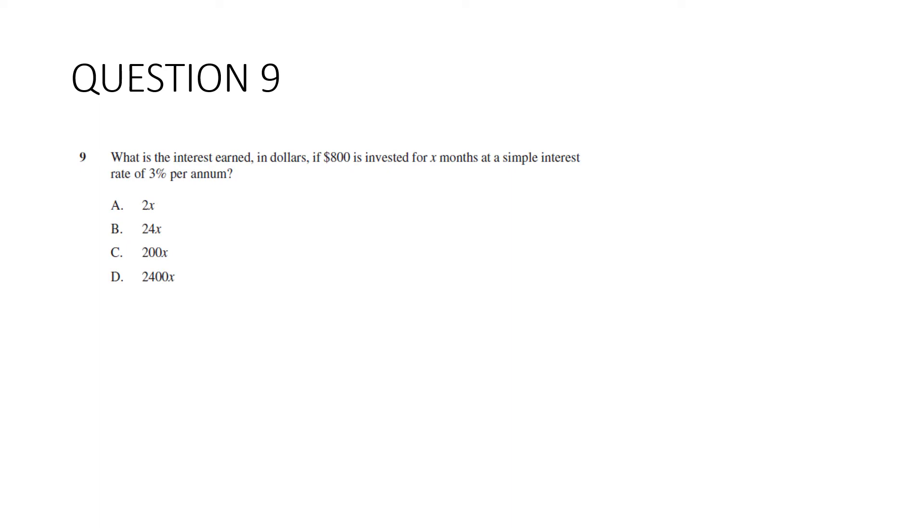Question nine. What is the interest earned in dollars if $800 is invested for X months at a simple interest rate of 3% per annum? So we're not given the formula for simple interest. It's a nice, easy one to remember. It's I equals PRN or PRT. It doesn't really matter. And the only trick with it is that R and N have to be the same. They're either both in years or both in months. Let's have a look how we do it. So P, the principal is $800. The interest rate is 3% or 0.03. And you can see I've decided to do it annually or in years. So I've had to turn this into a proportion of a year. You could put the divide by 12 under here if you wanted to. Do 800 times 0.03 divided by 12 gives us 2. And so our answer is 2X.